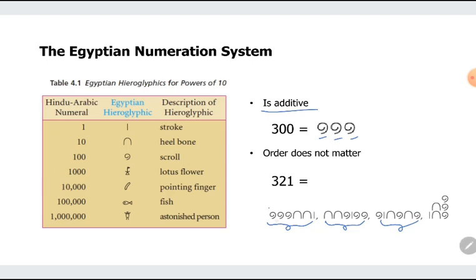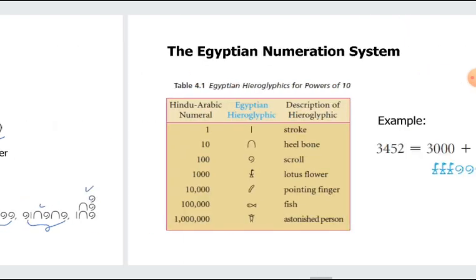So we have three scrolls, that means 100 times 3, 300. Two heel bones, that's two tens, so 20. And then one stroke, so 320 and 1, 321. These are just a rearranged version of the first one. You can also arrange it this way. So pretty much anyway, as long as they are together. There are no spaces between them.